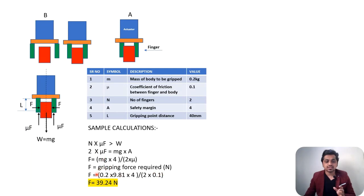We can put all these parameters - we have all those values. Finally what we get is the required gripping force is 39.24 newtons. Whichever gripper you're selecting should have minimum this much amount of force. That's my system requirement.